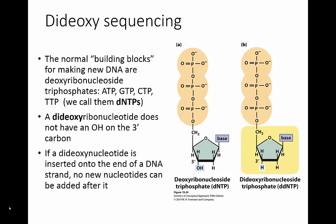Dideoxy sequencing uses DNA polymerase to synthesize new pieces of DNA using the normal building blocks — ATP, GTP, CTP, and TTP — called dNTPs. These normal bases all have a hydroxyl group (OH) on the 3' carbon, which is critical because DNA polymerase always adds new bases onto the 3' end of an existing strand. If you don't have that OH, you cannot add any more bases to that strand.